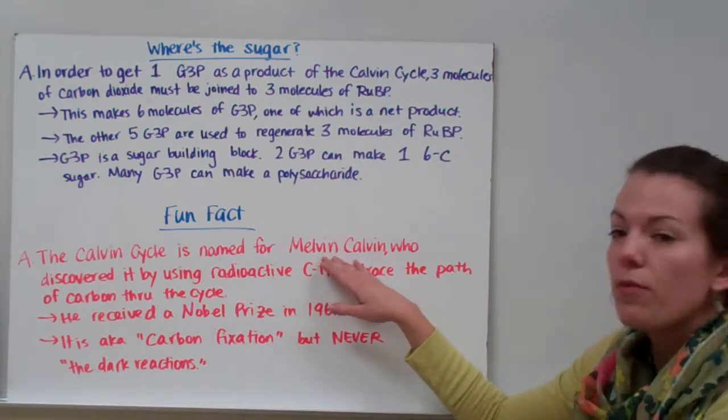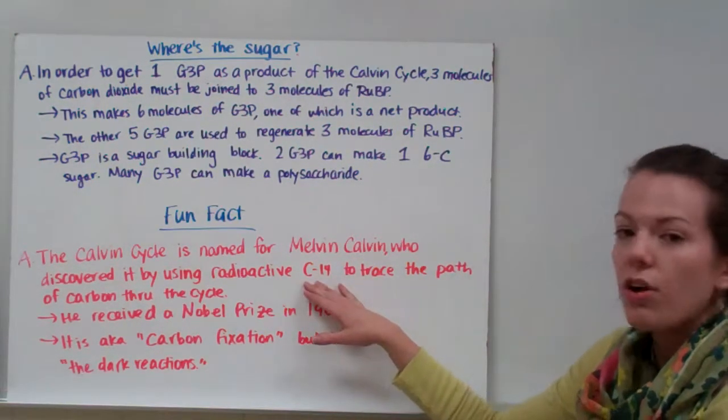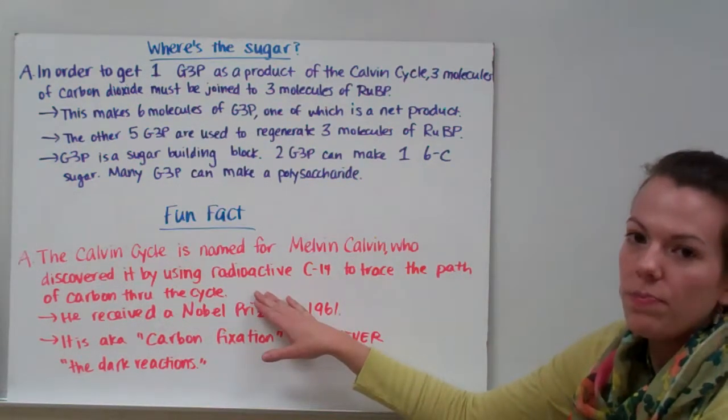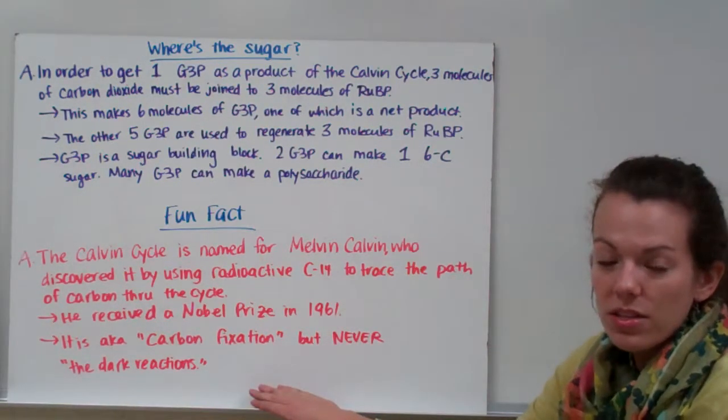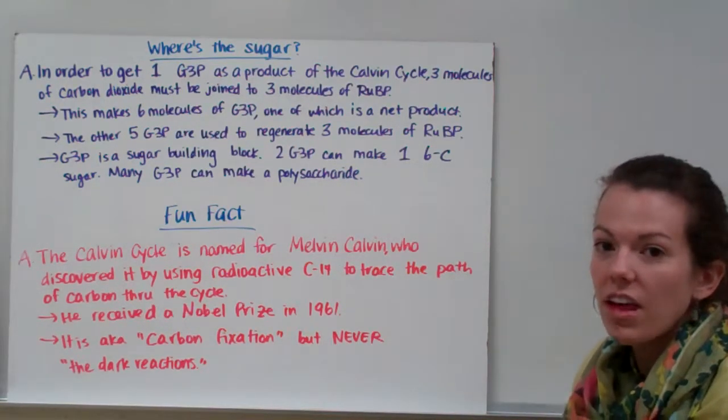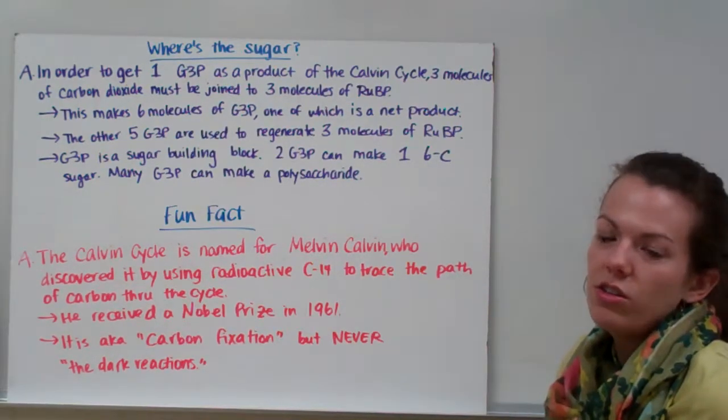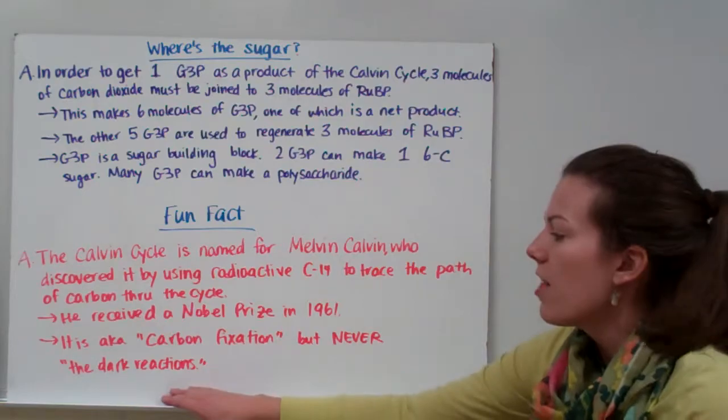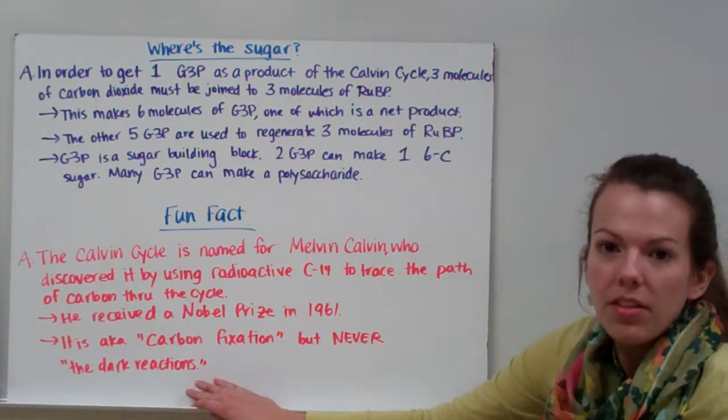Now, fun fact, the Calvin cycle is named for Melvin Calvin. He discovered the Calvin cycle, or how it works, by using radioactive carbon-14 to trace the path of carbon dioxide through the cycle. He received a Nobel Prize for it in 1961. This cycle is also known as carbon fixation. Instead of saying the Calvin cycle, we can just call it carbon fixation—we're fixing CO2, fixing carbon into G3P or sugar. But we never, ever, ever call it the dark reactions because although it doesn't require light, it doesn't necessarily happen in the dark.